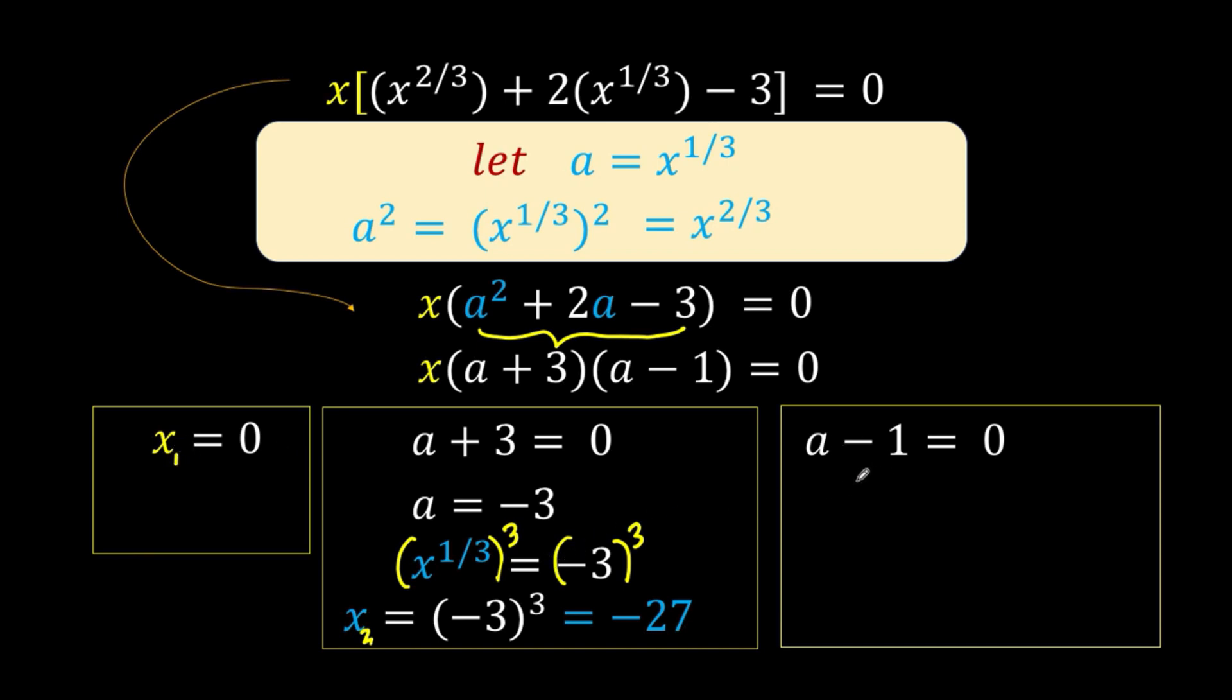Now for the third, let's solve for a. Adding 1 to both sides gives us a equals 1. We replace a with x raised to 1 third. Then raise both sides to the third to simplify the left side to x. And 1 cubed equals 1. This is our third solution, x equals 1. So we have three answers: x equals 0, x equals negative 27, and x equals positive 1.